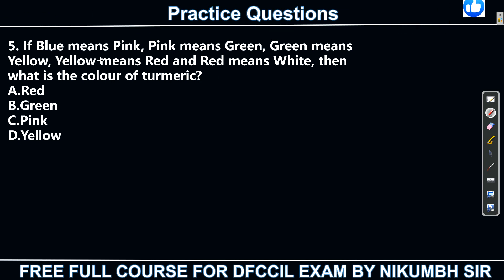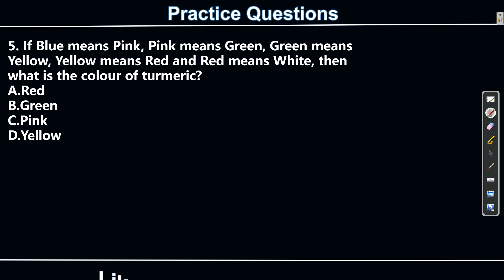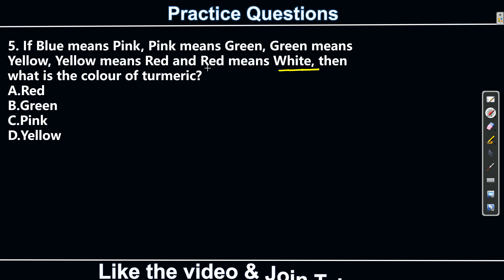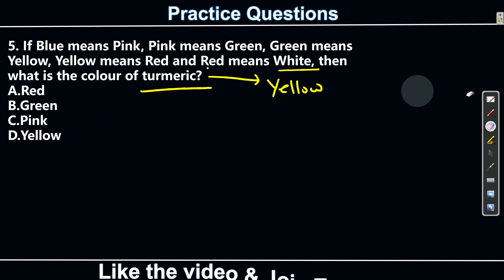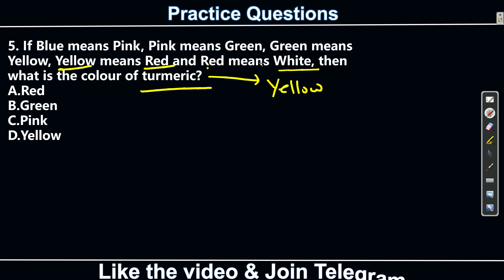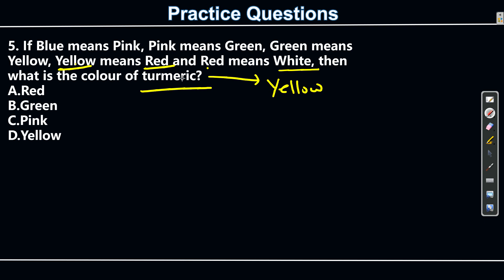You will also get another type of question like: blue means pink, pink means green, green means yellow, yellow means red, red means white. What is the color of turmeric? You know turmeric is yellow, but according to these rules yellow means red — so the answer is red, not yellow. You must apply the given logic, not your real-world knowledge.